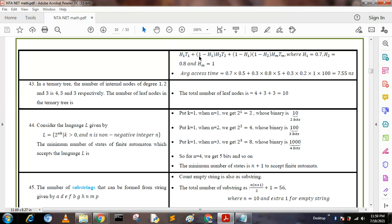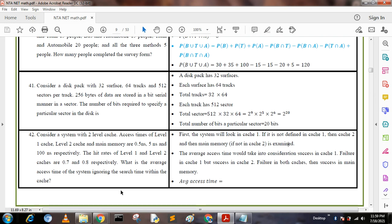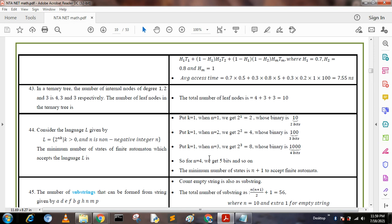where h1 = 0.7, h2 = 0.8, t1 = 0.5, t2 = 5, tm = 100. We put these values: 0.7 × 0.5 + 0.3 × 0.8 × 5 + 0.3 × 0.2 × 100 = 7.55 nanoseconds. This is the required answer.